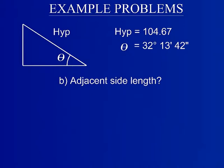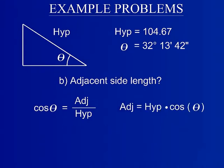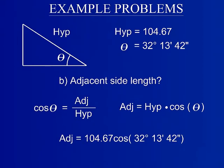Next, using the same process as before, find the adjacent side length. However, instead of the sine function, use the cosine function to find the adjacent side. The adjacent side length of this triangle is 88.54 feet.